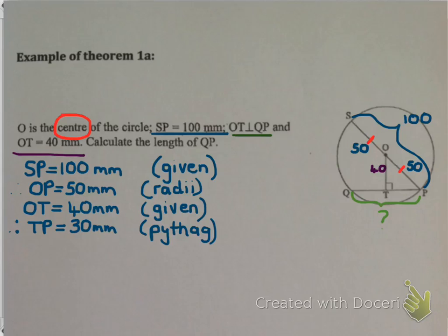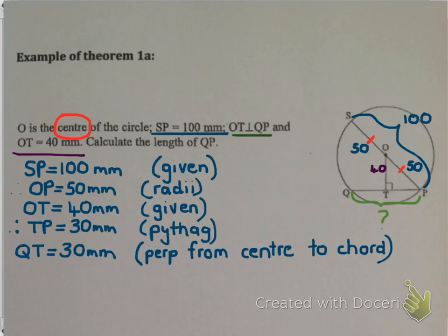I know the Pythagorean triple 3, 4, 5, so 30, 40, 50 is a Pythagorean triple. Obviously if it was more difficult I would show all my working out. But now this means that QT is also 30, and this is where our theorem comes in. I know it's 30 because I have a perp from center to chord, so in my head I know that means my chord is bisected. So QT is also 30, which means I can finish and say QP is 60mm. And I'm done.